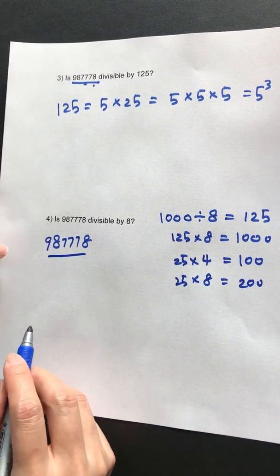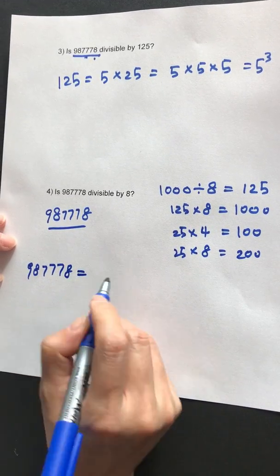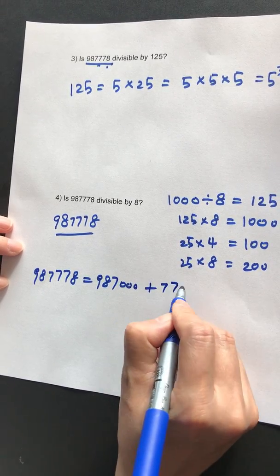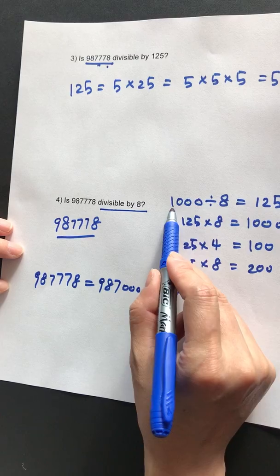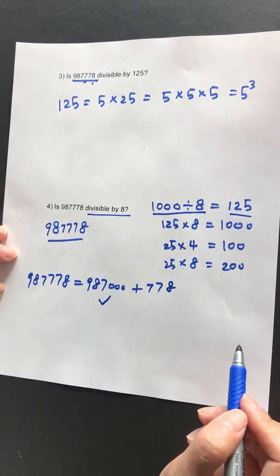Now let's break down this number. 987,778 equals 987,000 plus 778. For divisibility by 8, every 1,000 can be divided by 8, so this part can be divided by 8.